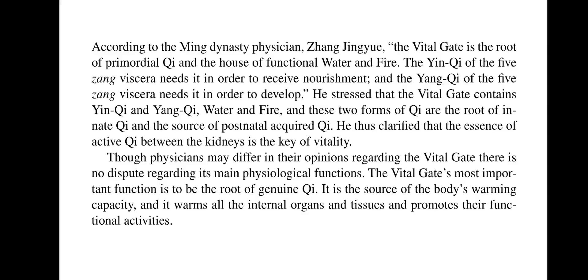According to the Ming Dynasty physician Zhang Jingyue, the vital gate is the root of primordial qi and the house of functional water and fire. The yin qi of the five zang viscera needs it in order to receive nourishment, and the yang qi of the five zang viscera needs it in order to develop. He stressed that the vital gate contains yin qi and yang qi, water and fire, and these two forms of qi are the root of innate qi and the source of postnatal acquired qi. He thus clarified that the essence of active qi between the kidneys is the key of vitality. Though physicians may differ in their opinions regarding the vital gate, there is no dispute regarding its main physiological functions. The vital gate's most important function is to be the root of genuine qi. It is the source of the body's warming capacity, and it warms all the internal organs and tissues and promotes their functional activities.